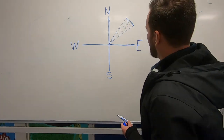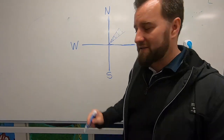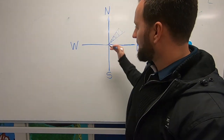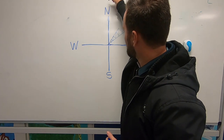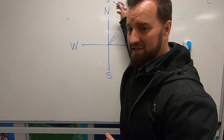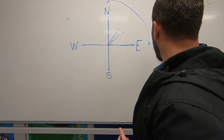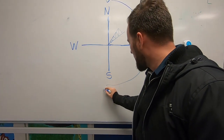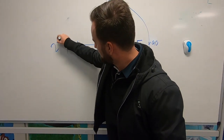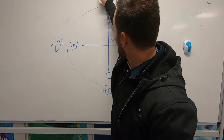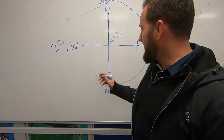Bearings use the premise of a circle. There are 360 degrees in a circle, so rather than thinking about just four different directions, we think about it as a whole circle. Up top is zero degrees, and as you go around the circle you get to 90 degrees — a quarter — then 180, halfway, then 270, and of course 360 back at the top.